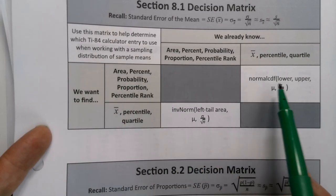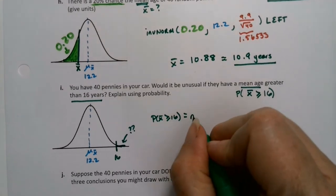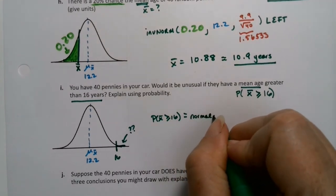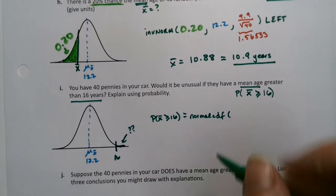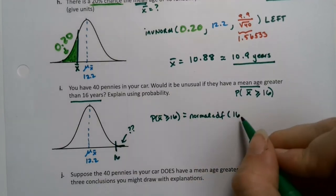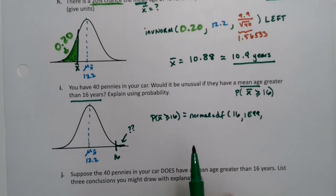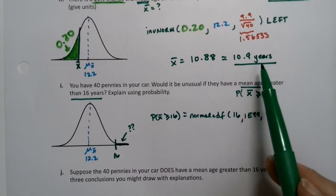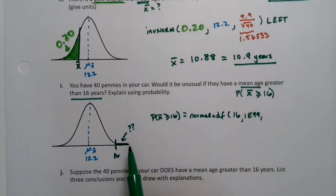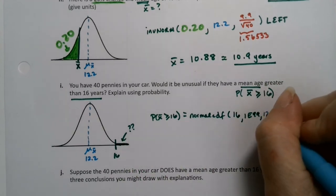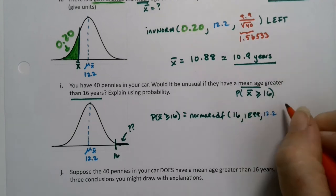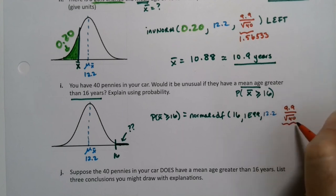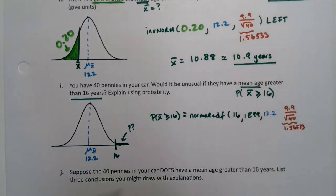Well, if I want to find a probability for unusual, I'm going to need normal CDF, lower, upper, mu, sigma, all that good stuff. Sigma divided by the square root of n. So normal CDF, 16 is the lower edge. 1E99 is the upper edge. Those same notes that we learned in the Chapter 7 decision matrix are still holding true here. Inverse norm can get us units. Right tail for normal CDF is 1E99. The mean is 12.2. And the standard error is not standard deviation. The standard error is 9.9 over the square root of 40, or if you like, 1.56533, whichever makes you happy.